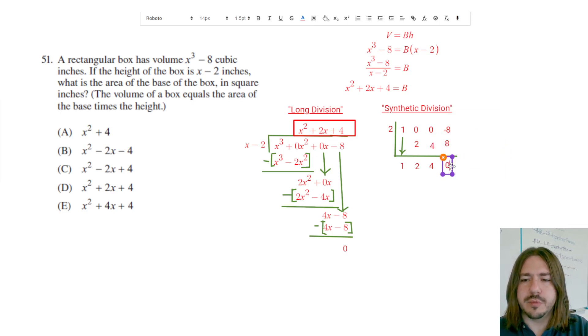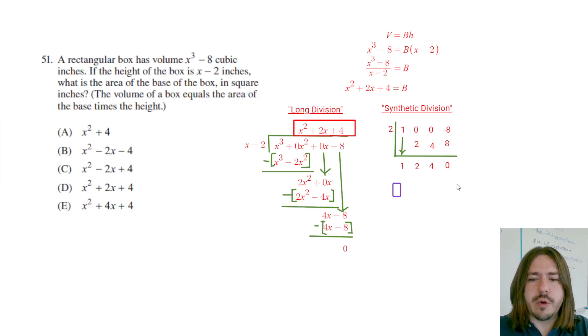This last number is the remainder. Notice we've got 0 remainder in both of these cases. And then each one of these numbers represents the coefficient of the quotient. So each of these represents a term in decreasing degrees. This would be 1x squared plus 2x plus 4. We don't need to write the 1 here. And so we get our quotient as x squared plus 2x plus 4. I know I'm really going through this quickly. I'm not really doing a deep dive into synthetic division. Again, if you want more details about this, there's tons of good videos out there that explain synthetic division. Khan Academy or I'm sure I've got a video out there somewhere too.